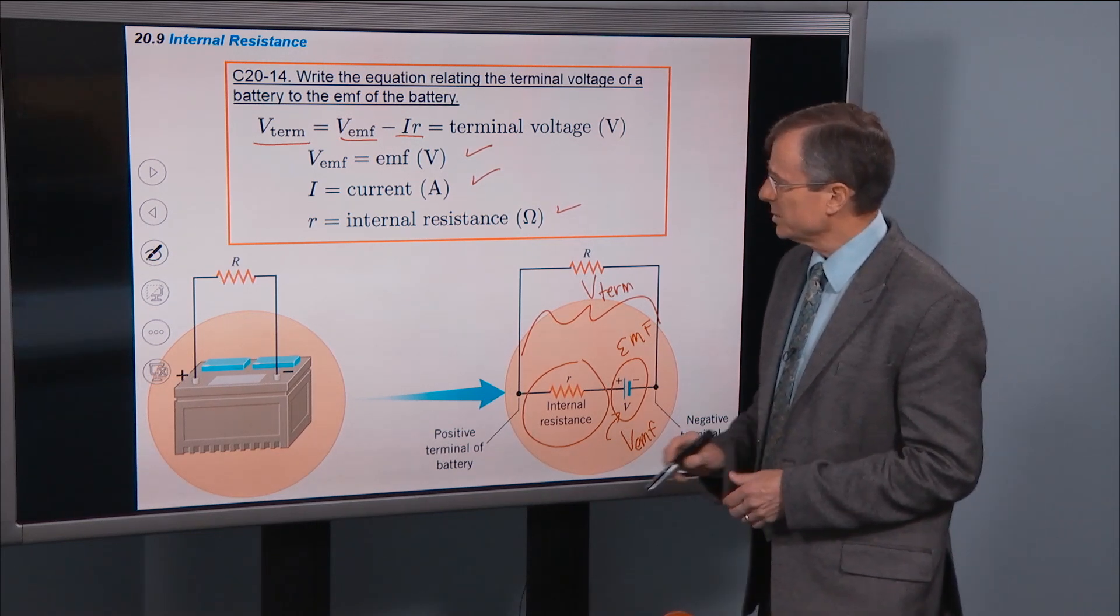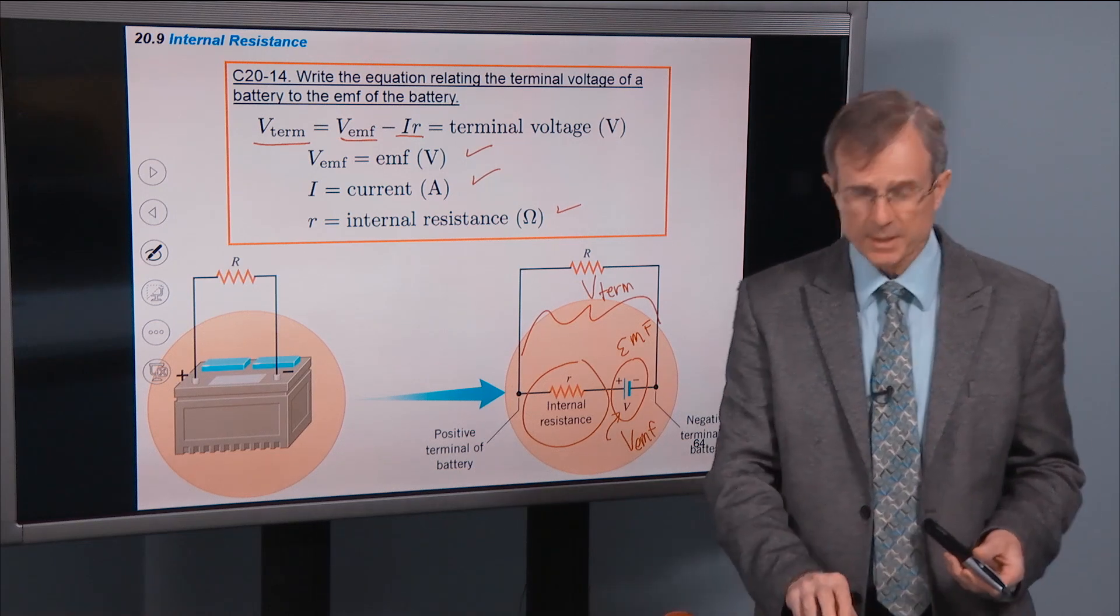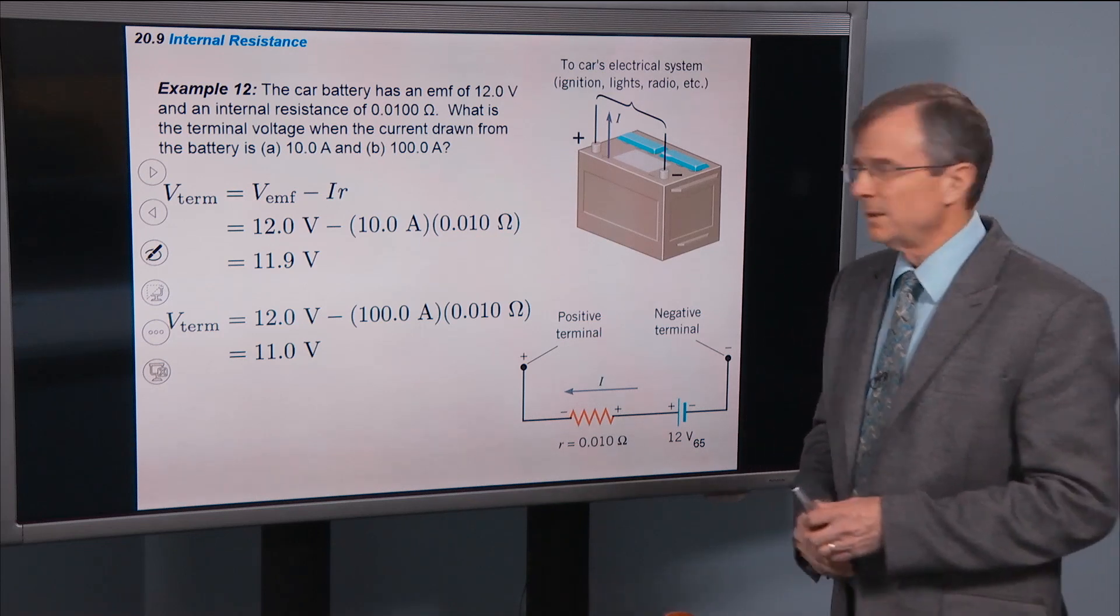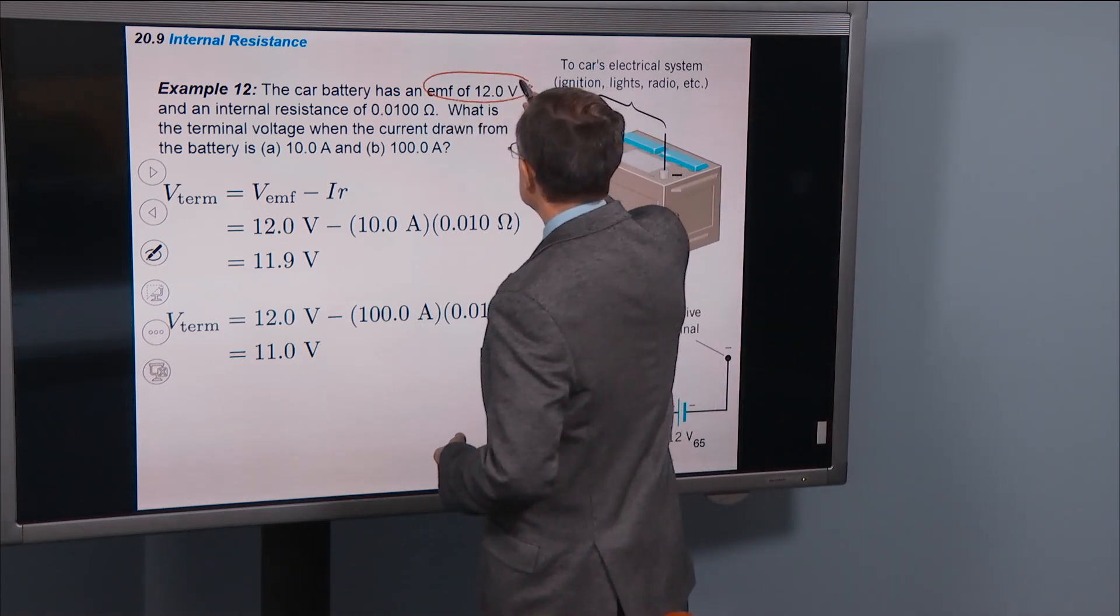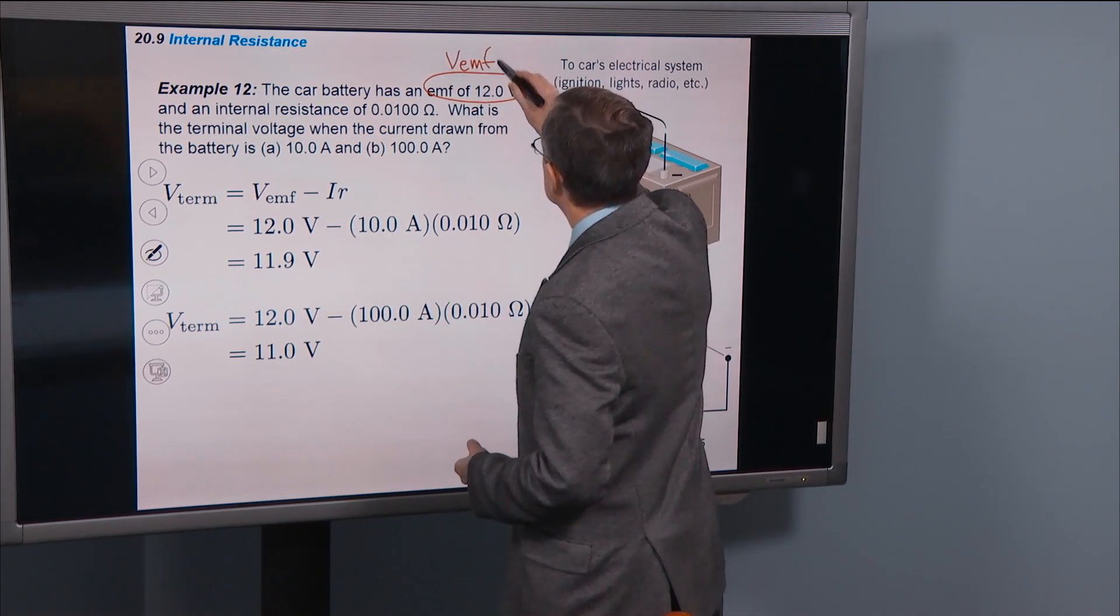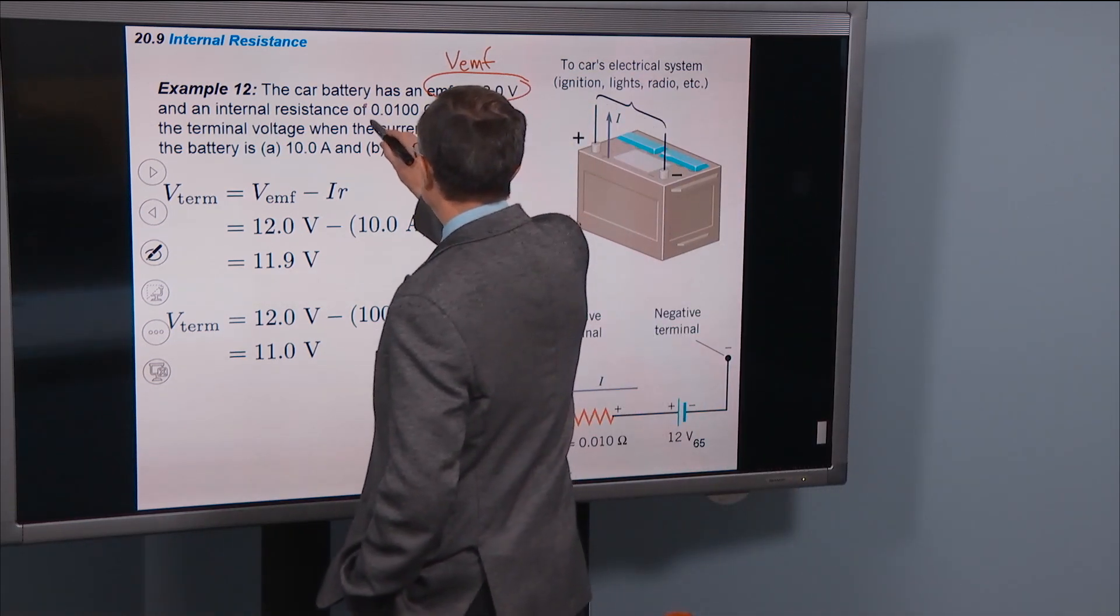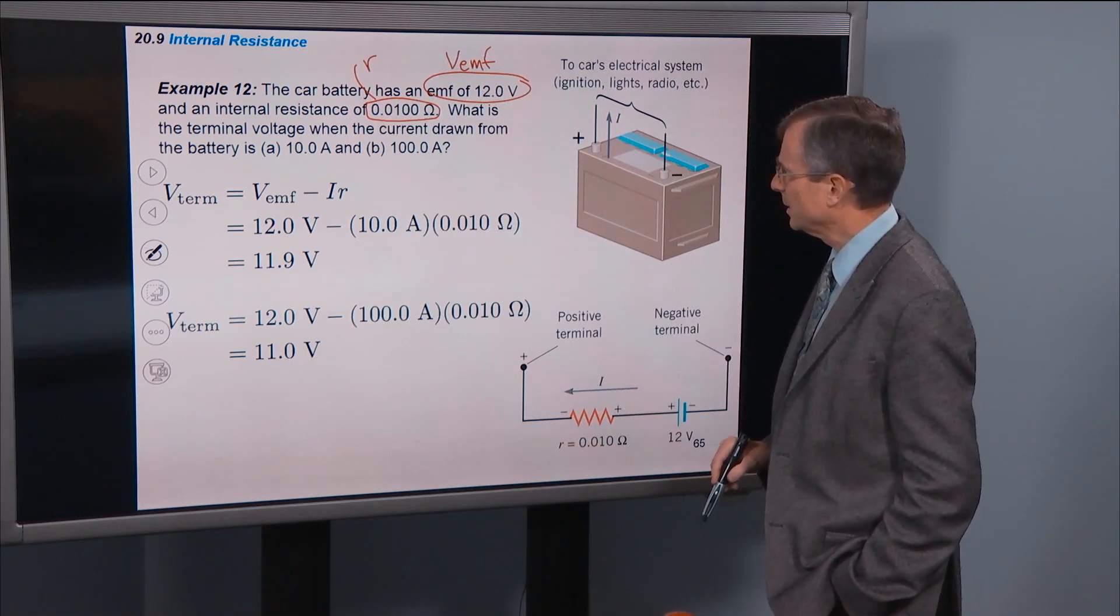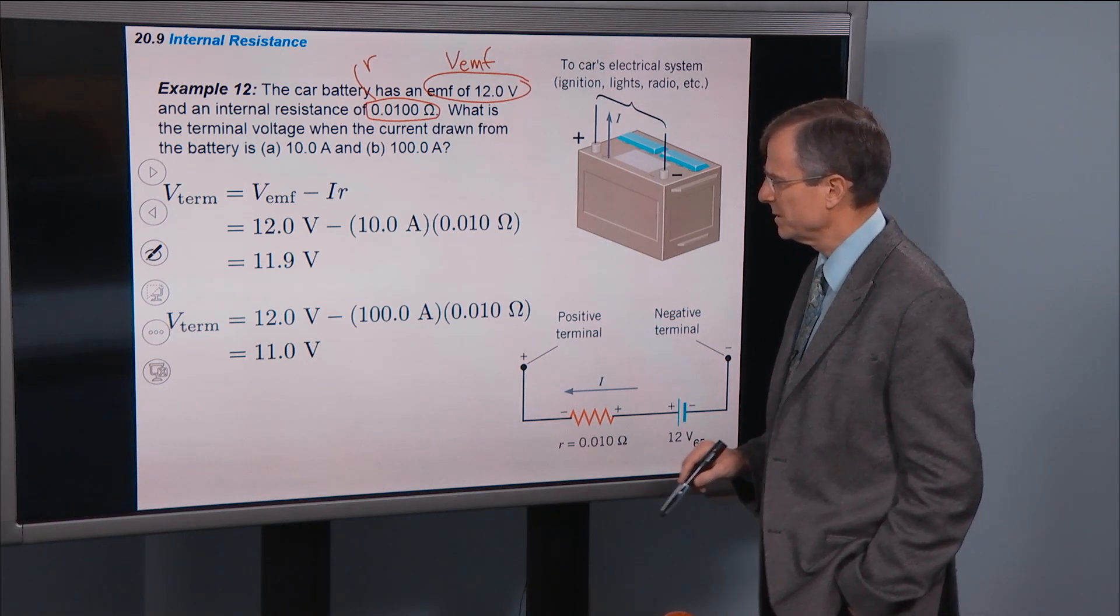So the next example, it's V_terminal equals V_EMF minus I times r. The next example will show you how important this may be. So a car battery has an EMF of 12 volts. And an internal resistance of 0.01 ohms. What is the terminal voltage when the current drawn from the battery is 10 amps versus 100 amps?